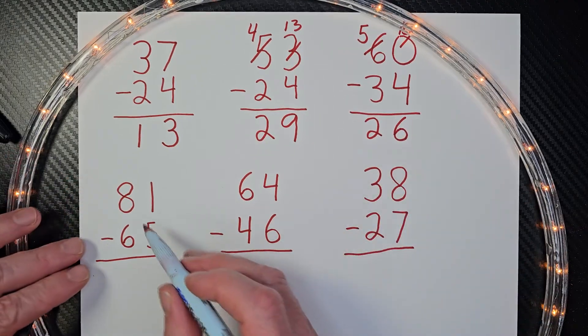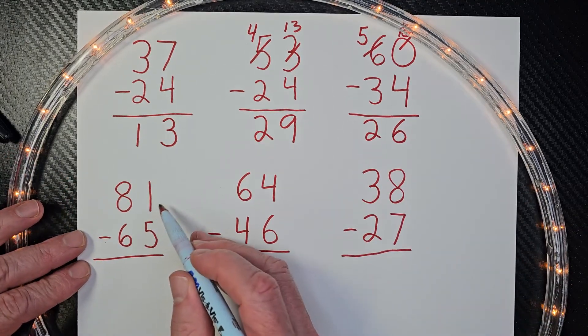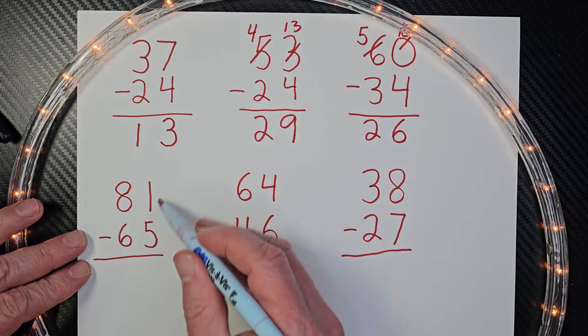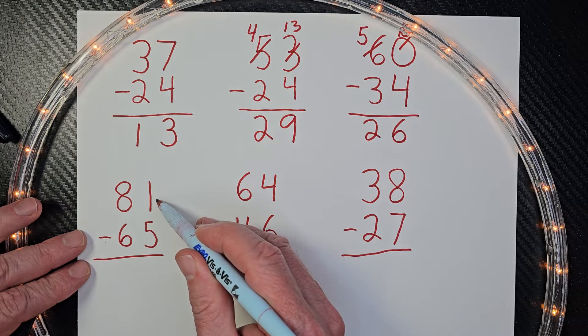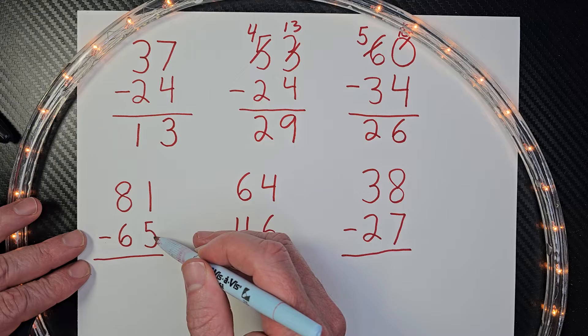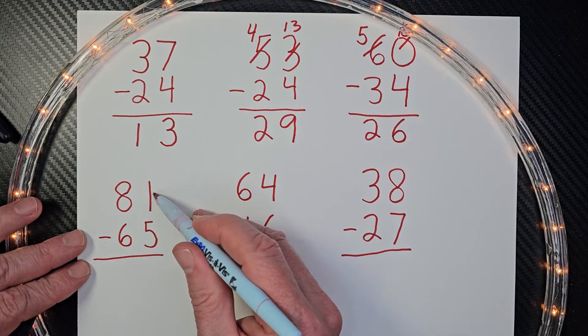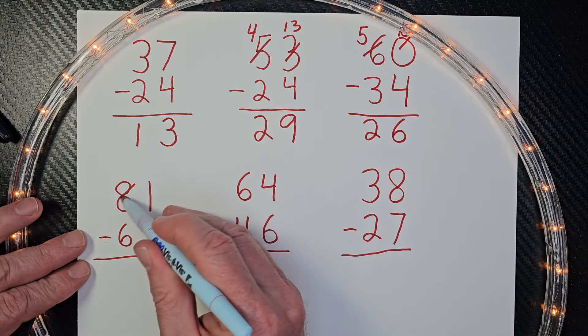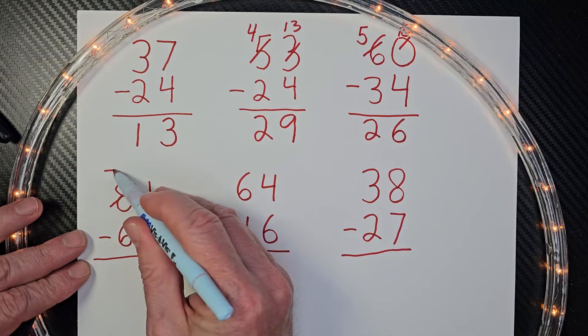Okay. I have another little problem that sometimes students might be a little confused on. See this number here? One. One minus five. I can't do it. We need to make this number bigger. So I borrow one from the eight and this will be a seven.